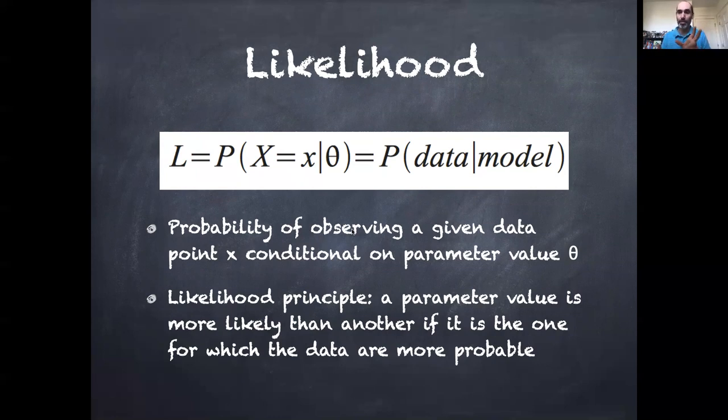So theta, in this case, was a vector of two parameters, and we had two alternative ones. And we could say, for each of those hypotheses, what was the probability of observing that data? So in some sense, what was the probability that this particular model represented by this set of parameters produced this specific set of data?